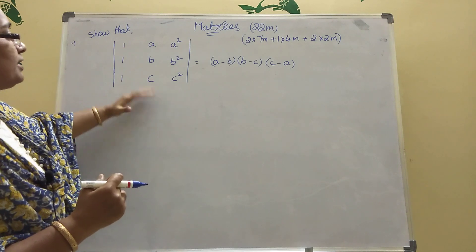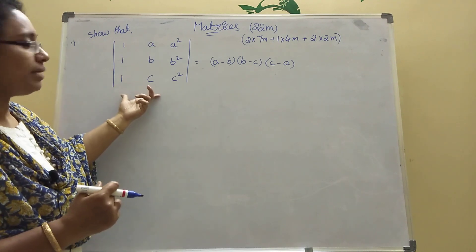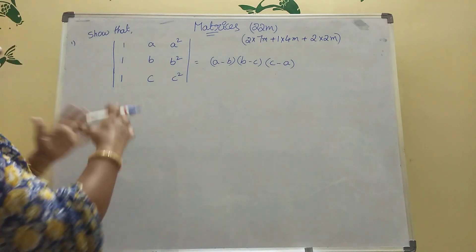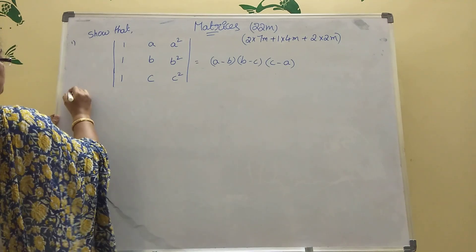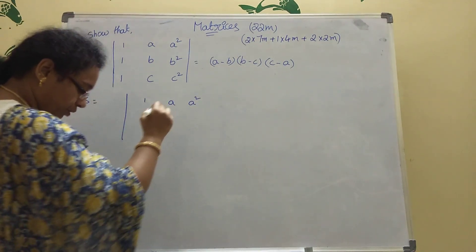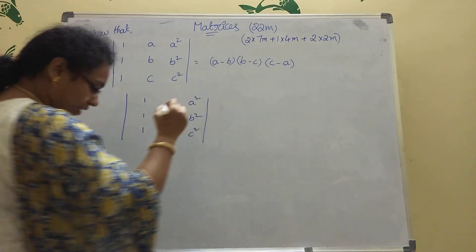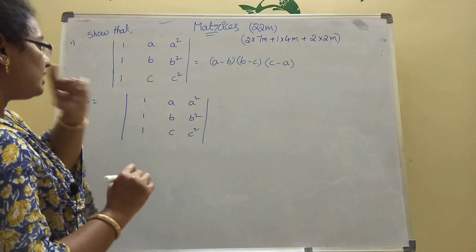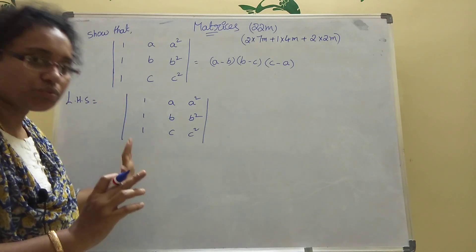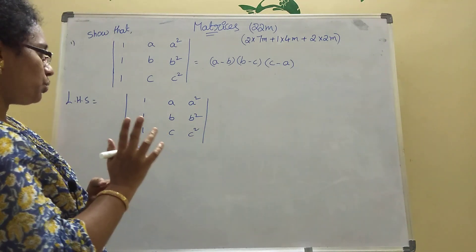Now, one sum is given here using the matrix method. Do you know what it is? It is a 3×3 matrix — three rows and three columns. We will prove that the determinant equals (a−b)(b−c)(c−a). Now I am taking LHS. You write the matrix as: row 1: 1, a, a²; row 2: 1, b, b²; row 3: 1, c, c². Once ones are in a row or column, you convert any two of them to zero.